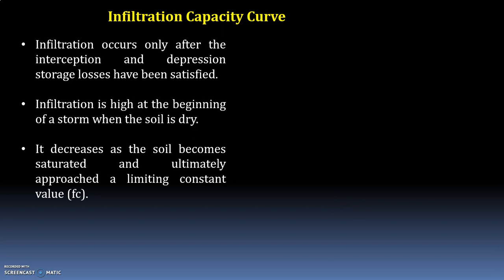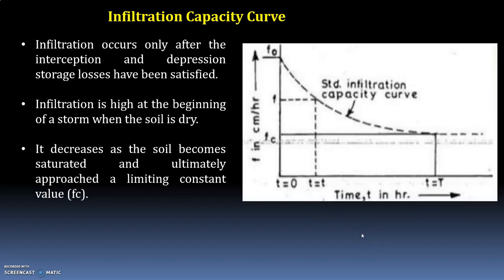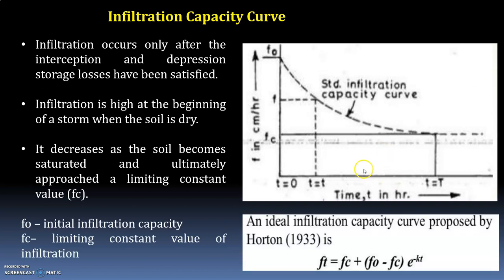Infiltration is high at the beginning of a storm when the soil is dry. It decreases as the soil becomes saturated and ultimately approaches a limiting constant value. The capacity of any soil to absorb water from rain falling continuously at an excessive rate goes on decreasing with time until a minimum rate of infiltration is reached. At any instant, the infiltration rate equals the infiltration capacity F0 or the rainfall rate, whichever is less.